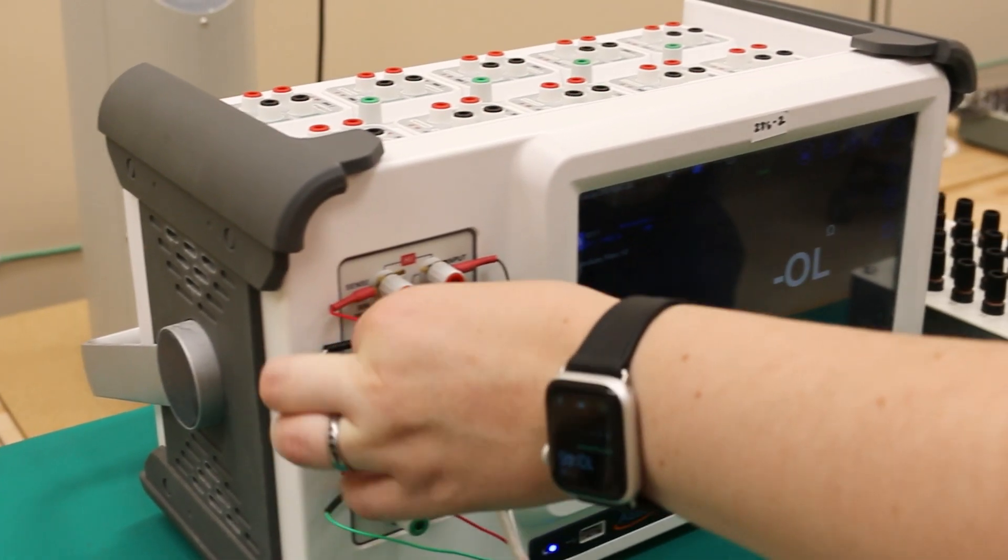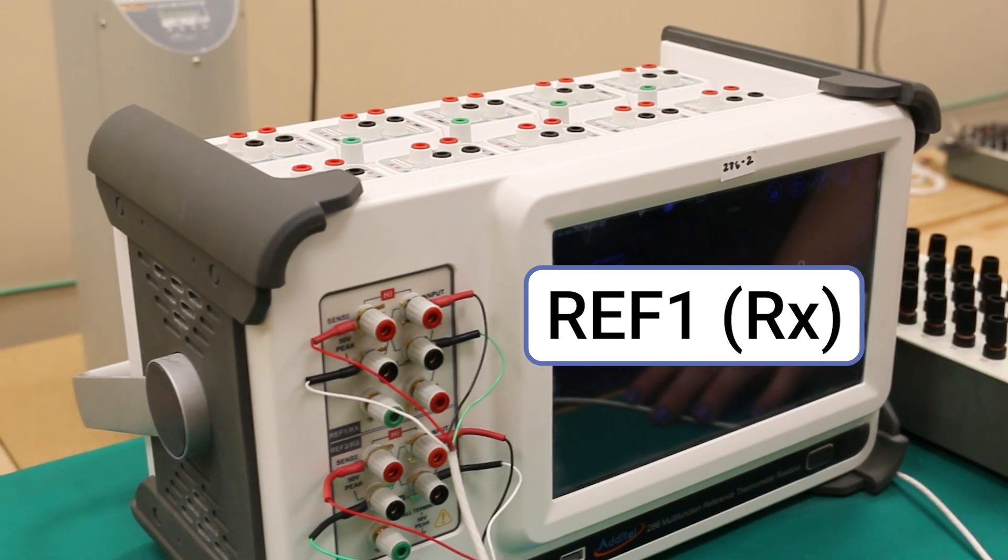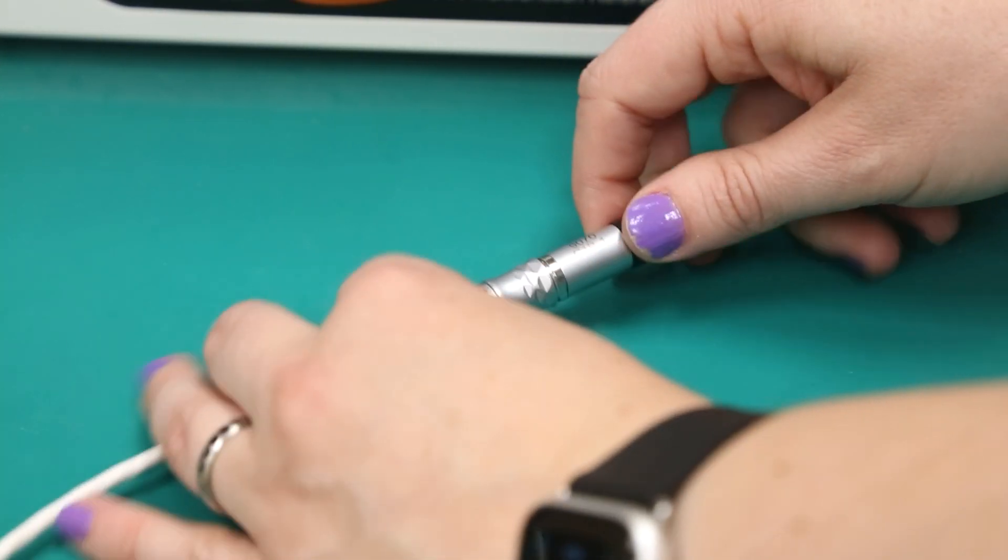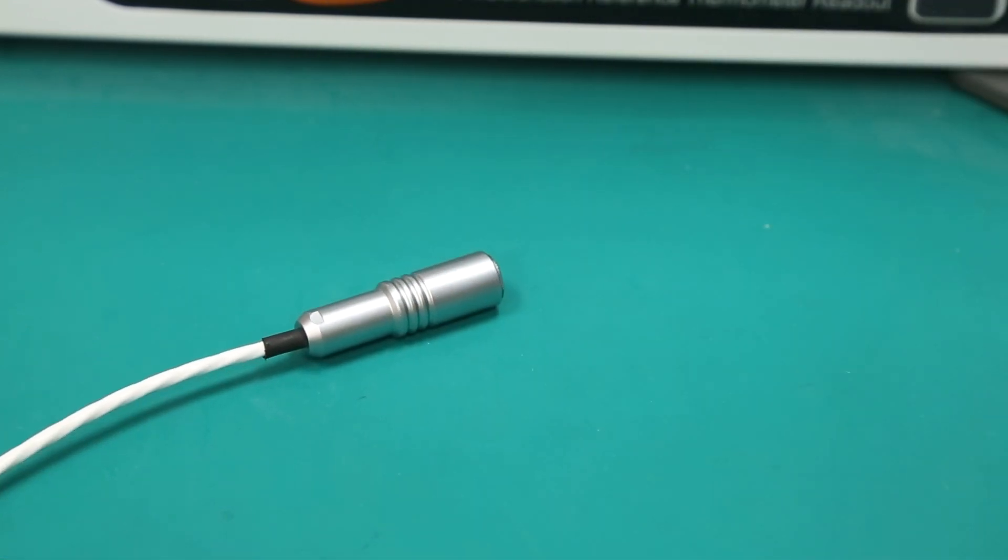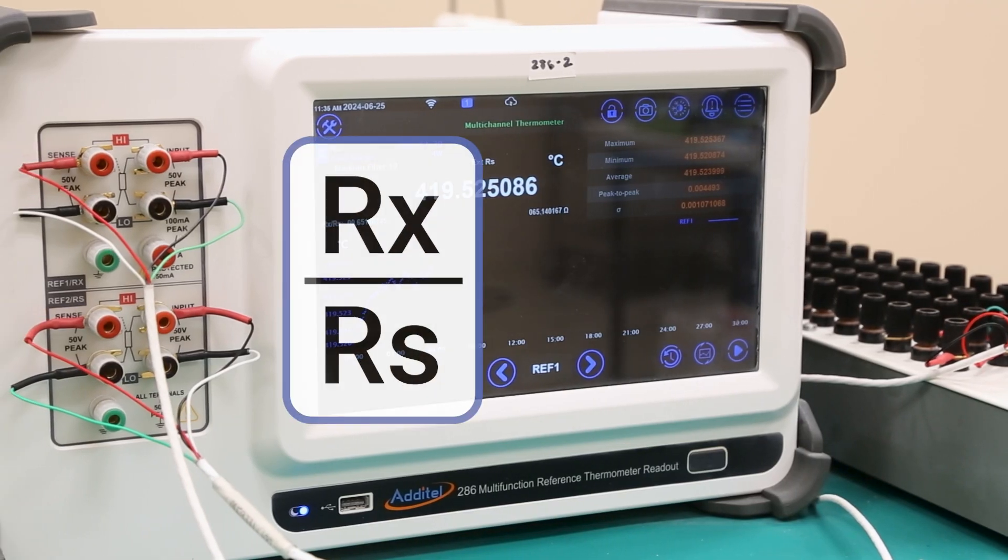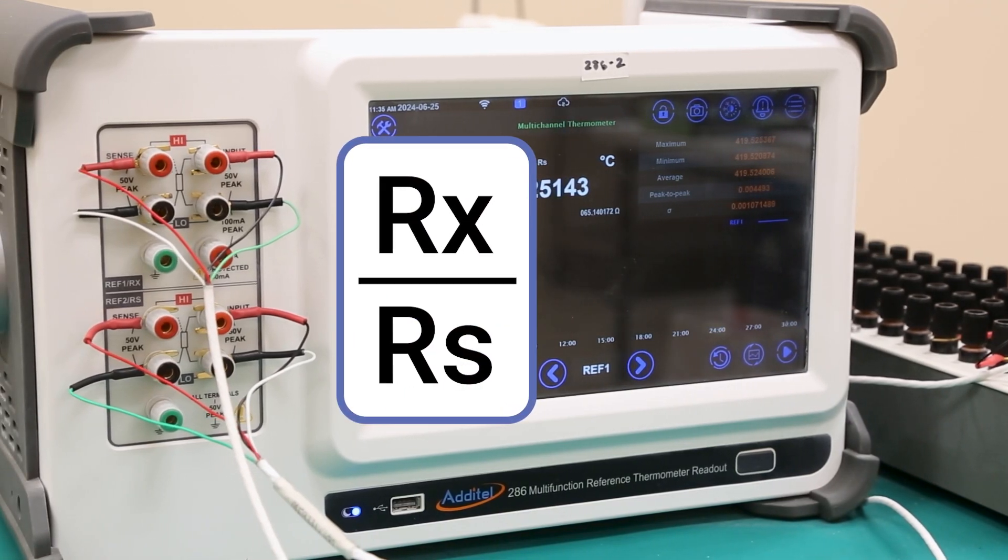Next, we'll connect a four-wire cable to REF1. Since all the DUT probes being used have the same quick connector, we will be able to easily swap them out without disconnecting the four-wire connection. While in bridge mode, the 286 will measure the resistance ratio from both reference ports.